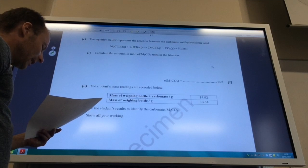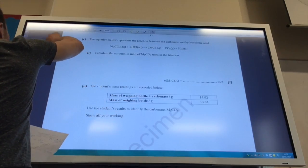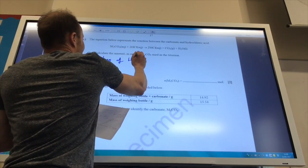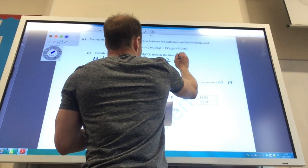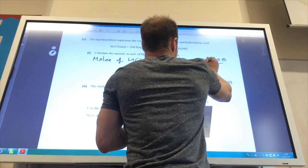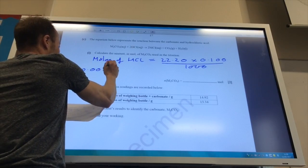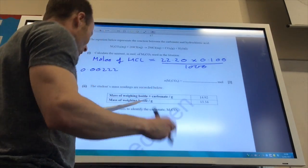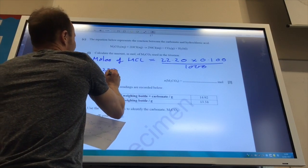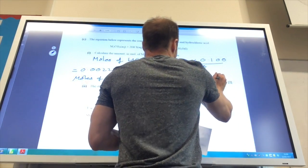The equation represents the reaction of carbonate and hydrochloric acid. Calculate the amount of moles of M2CO3 using the titration. First thing we need to do is calculate the number of moles of HCl. Moles of HCl is going to be the titer, which we worked out to be 22.20, times the concentration, which is 0.1 moles per decimetre cubed over 1000, which comes to 0.0022 moles. Moles of M2CO3, if you look at the equation for every two of those I need one of those, is going to be half of that, which is 0.0011.